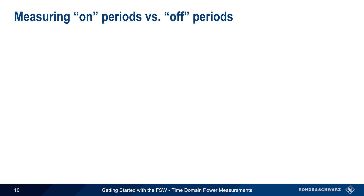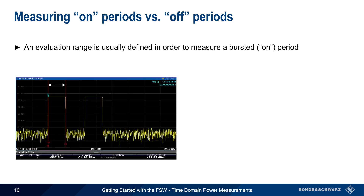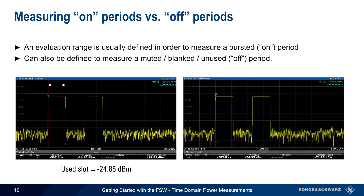One final thing to know about time domain power measurements is that usually an evaluation range or limits are used to measure the on period of a signal. For example, here the limits have been set to measure the first time slot and obtain the power within that time slot. However, it's also possible to define the evaluation range in order to measure the muted, blank, or unused time between active or on periods. In the example on the right, limits have been configured in order to measure the amount of power present in an off period — that is, within an unused time slot between active slots.